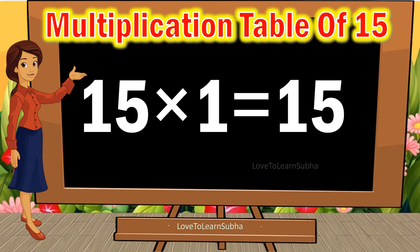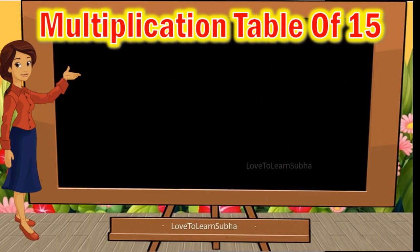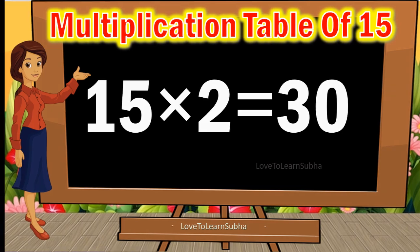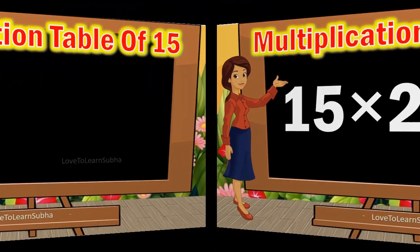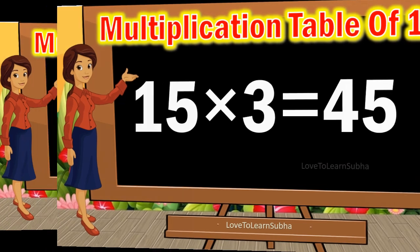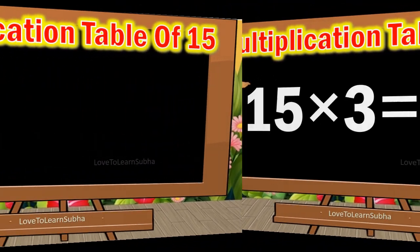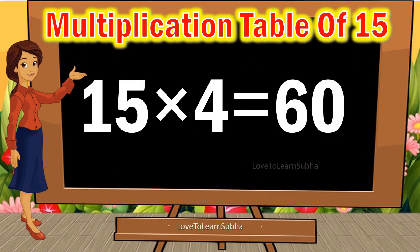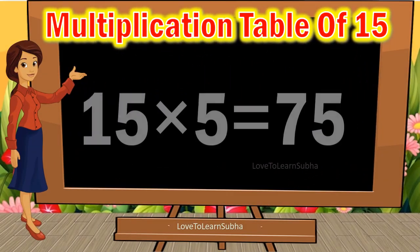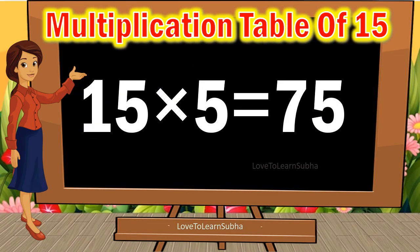15 ones are 15, 15 twos are 30, 15 threes are 45, 15 fours are 60, 15 fives are 75,